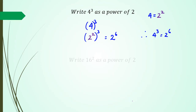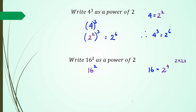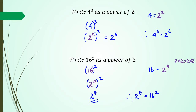Another example: write 16 squared as a power of 2. First I want to write 16 with a base of 2. I know that 2 to the power of 4 equals 16, because 2×2=4, 4×2=8, 8×2=16. So I replace 16 with 2 to the power of 4, and that's being raised to the power of 2. Expanding: 2 to the power of 4 times 2 equals 2 to the power of 8. So 16 squared equals 2 to the power of 8.